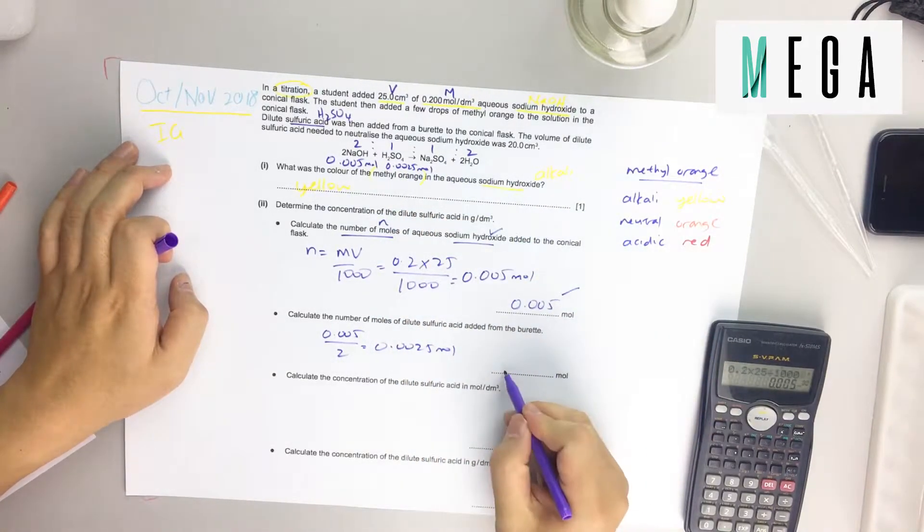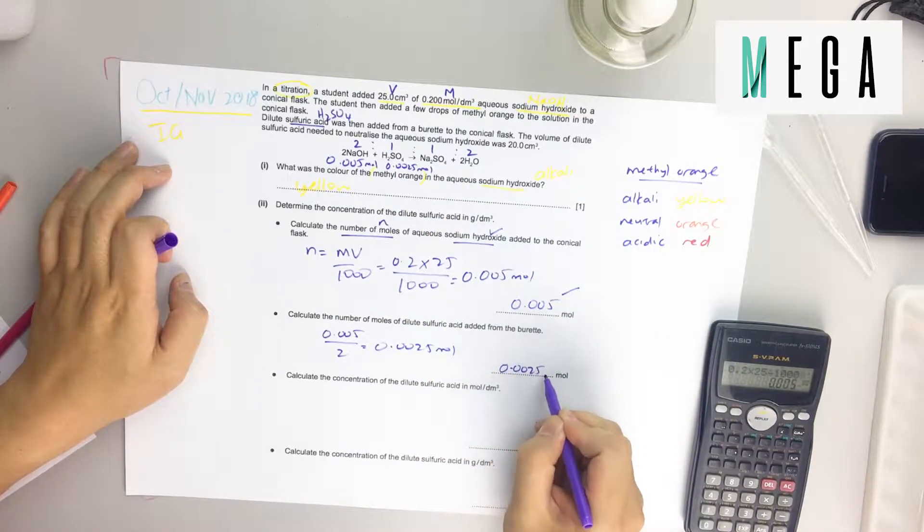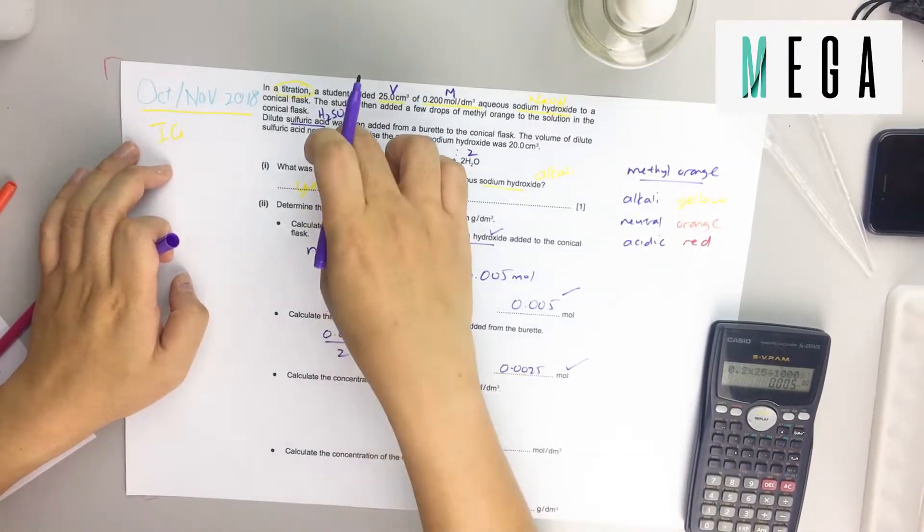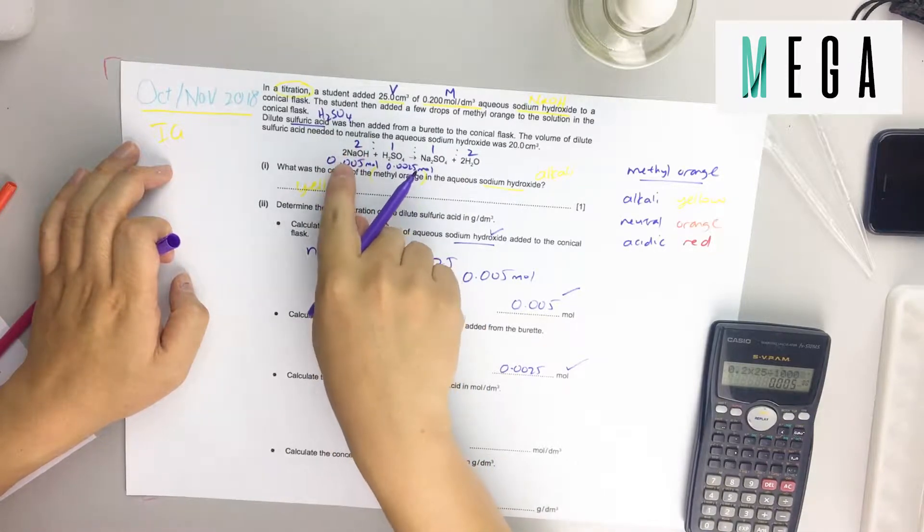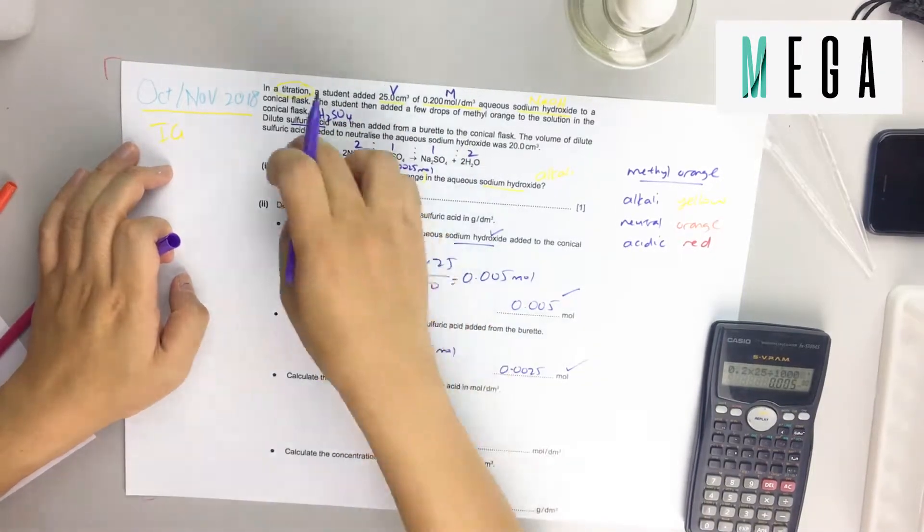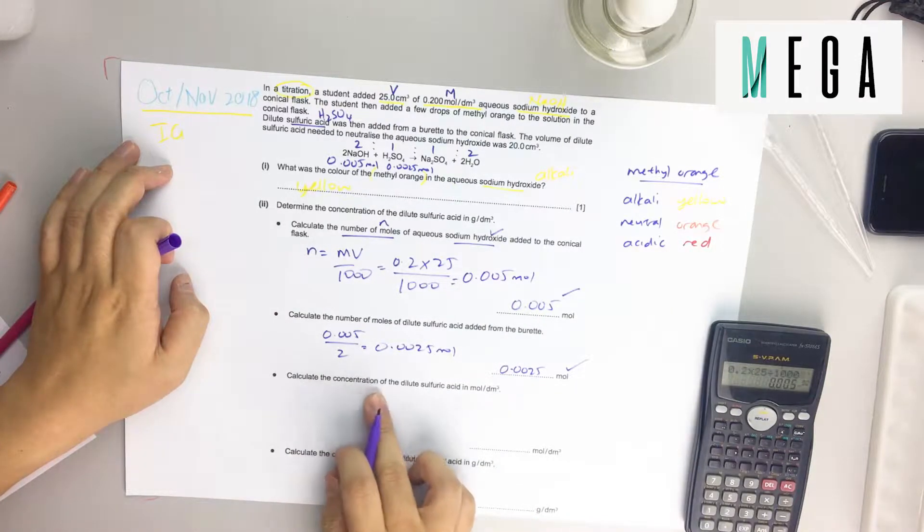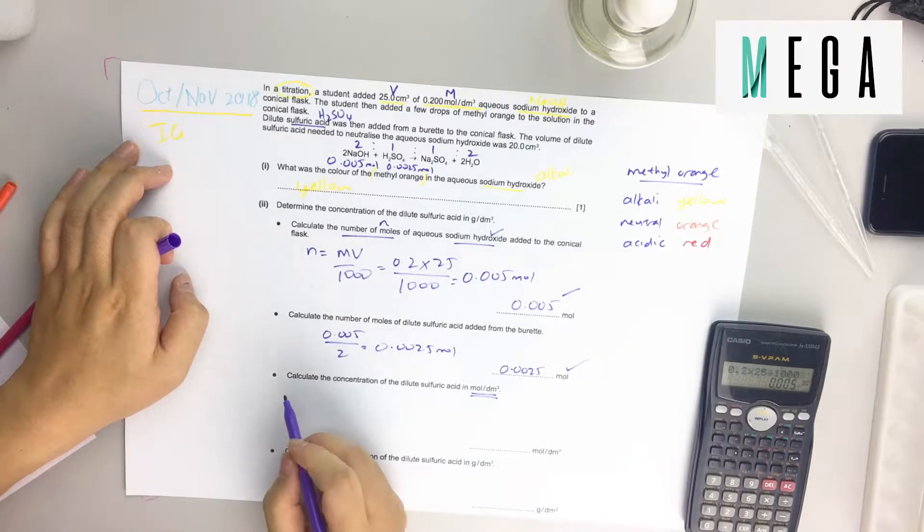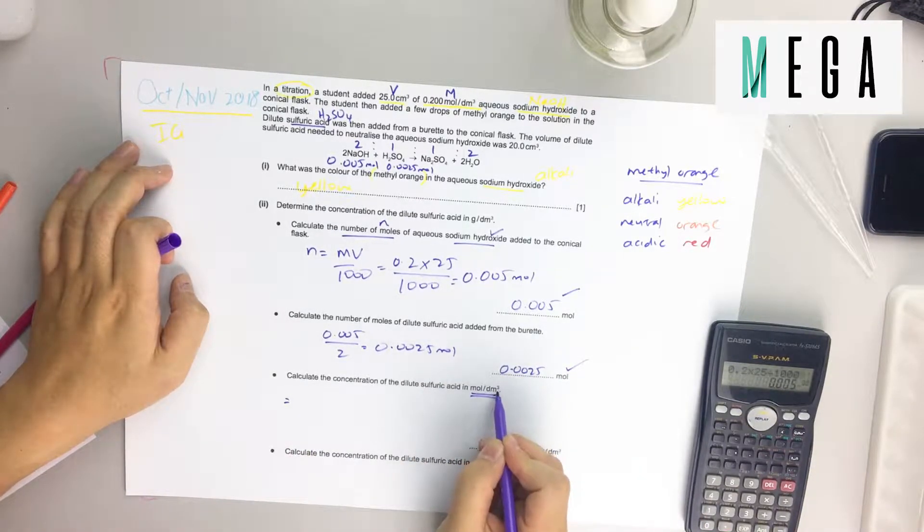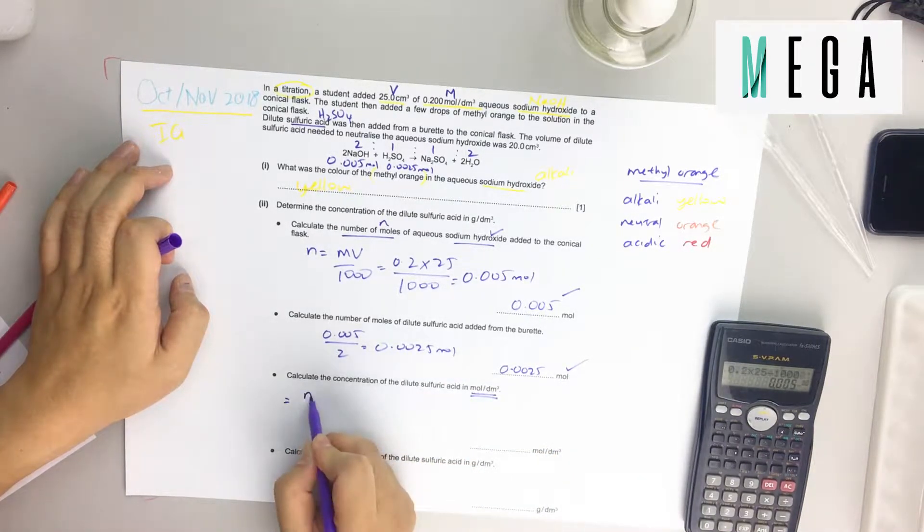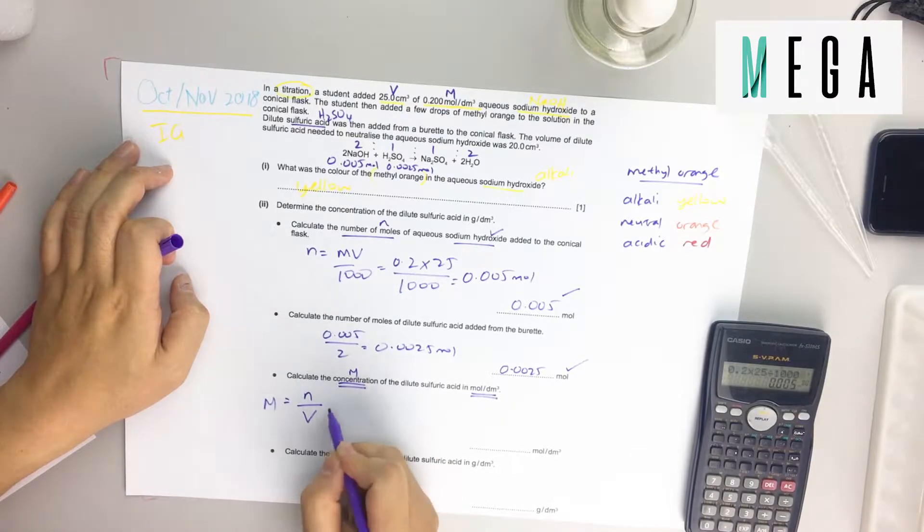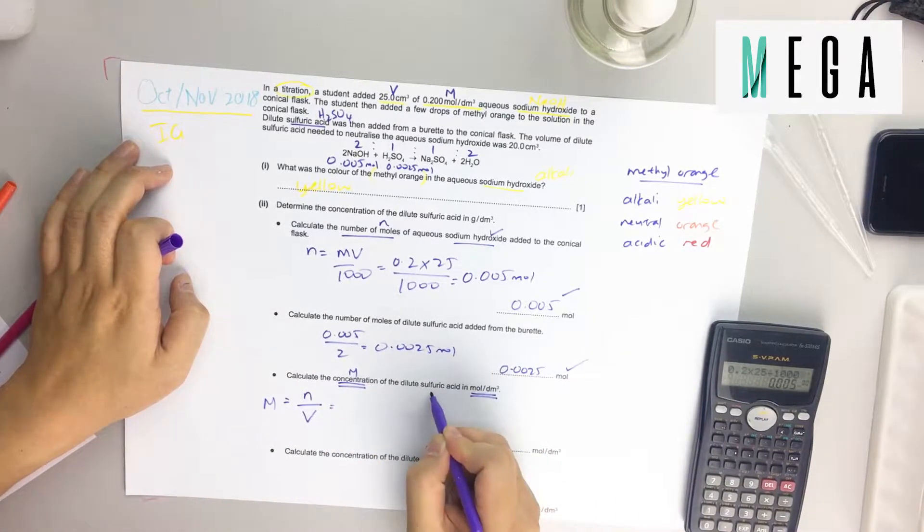This will be 0.0025 mol. They always give you information on one chemical and ask you to find another using the ratio. Calculate the concentration of dilute sulfuric acid. Since they give mol per dm³, remember mole per dm³ means mole is small n, dm³ is volume. Concentration is capital M.